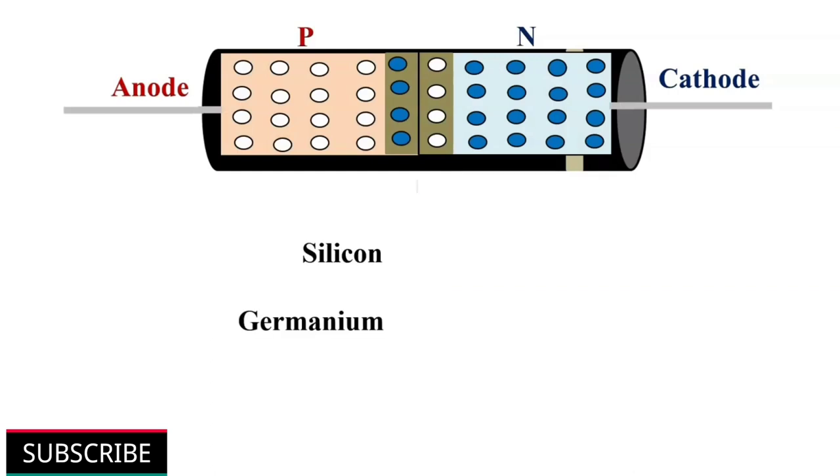We need to apply some external voltage to break this potential barrier in order to make it work. For silicon diodes, it is 0.7V and for germanium diodes, it is 0.3V.